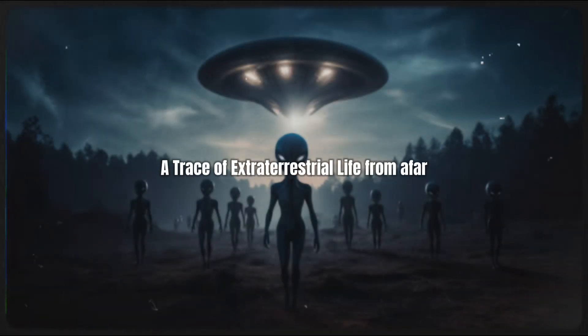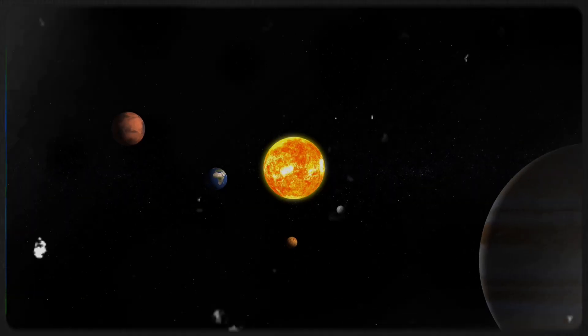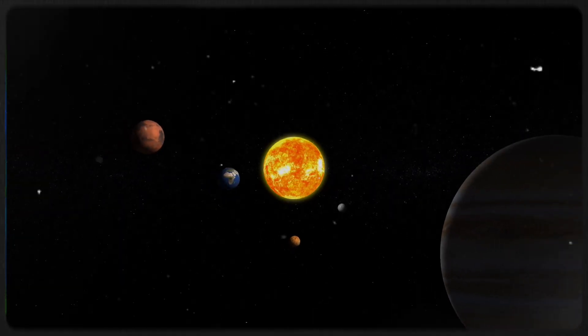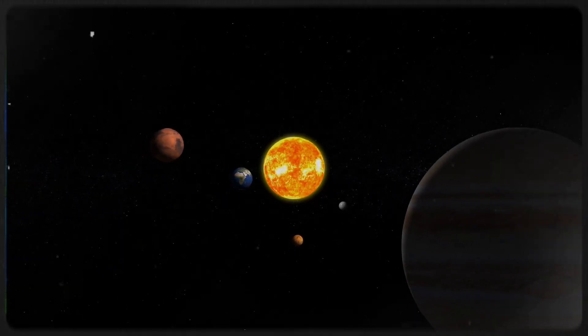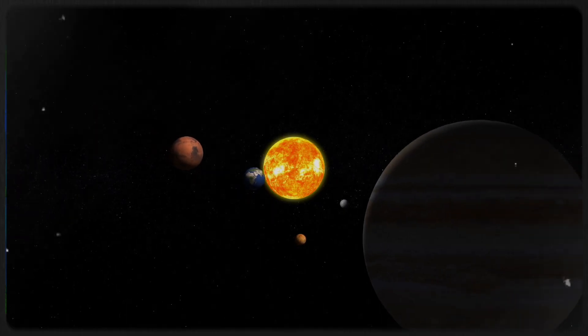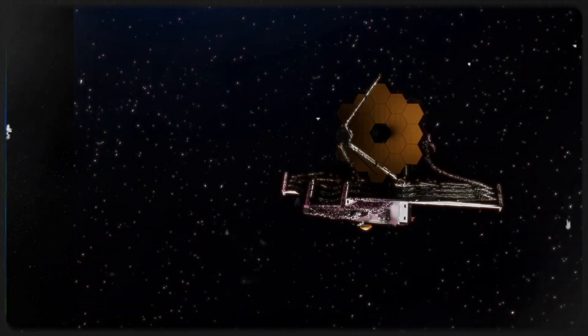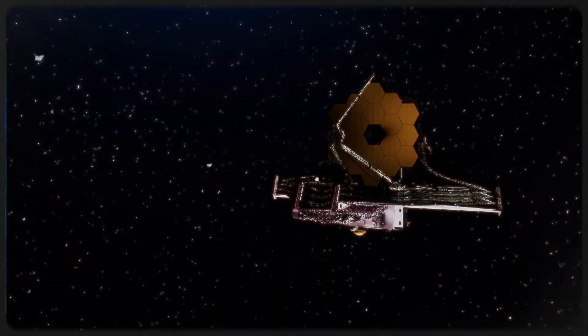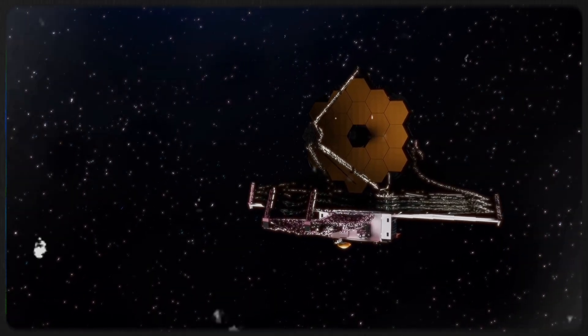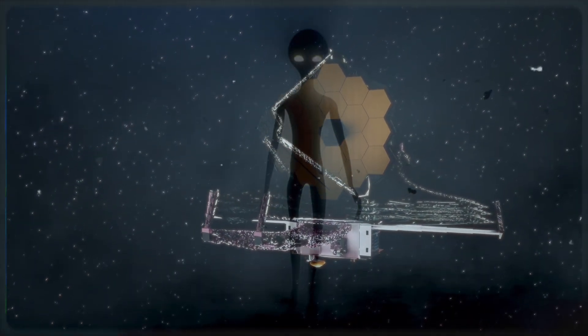A trace of extraterrestrial life from afar. People from all walks of life have been eager to see what life looks like outside our solar system for quite some time. We were overjoyed to see even a glimmer of proof that something might be out there. Then, a watershed moment arrived. The James Webb Space Telescope confirmed the existence of extraterrestrial life.